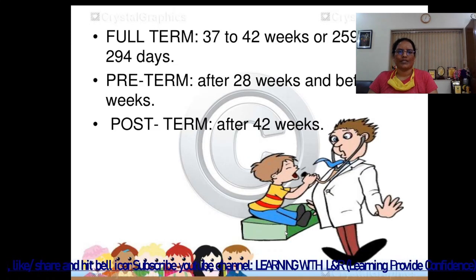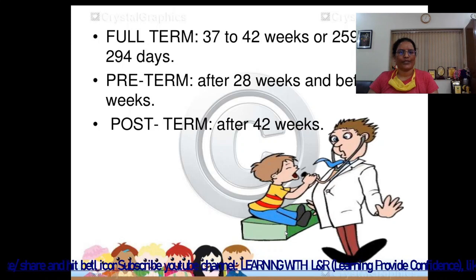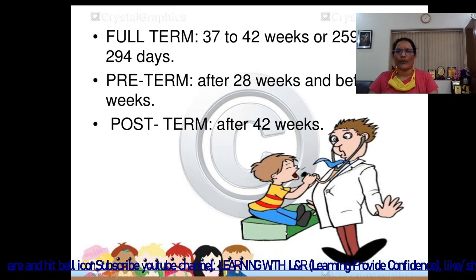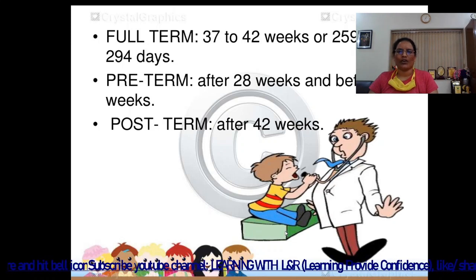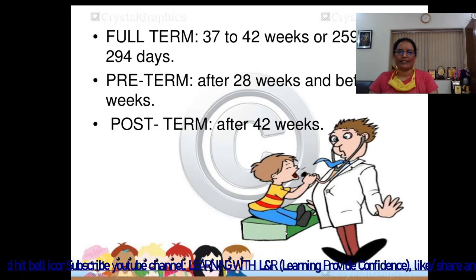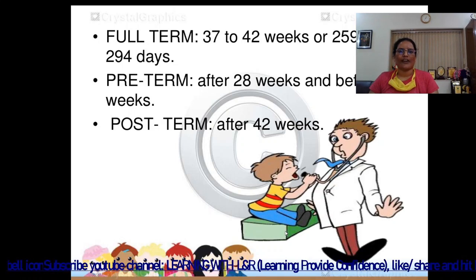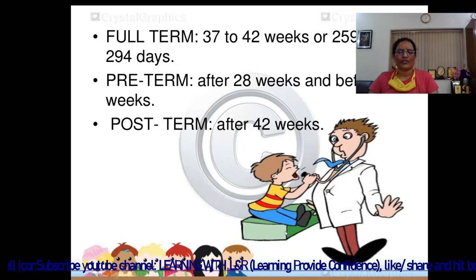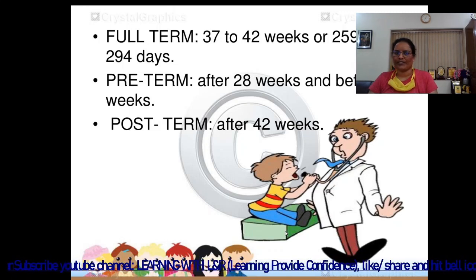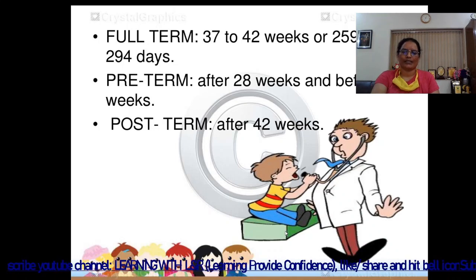Full term means the baby is born between 37 to 42 weeks, or 259 to 294 days. Preterm means birth after 28 weeks and before 37 weeks. Post-term means birth after 42 weeks.